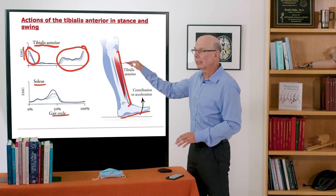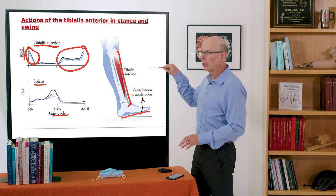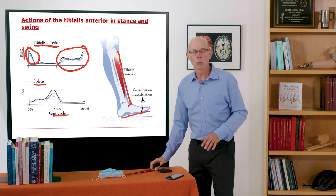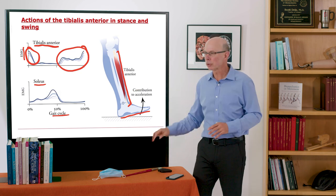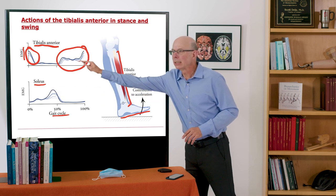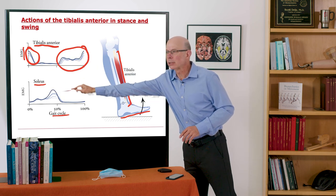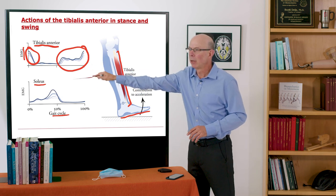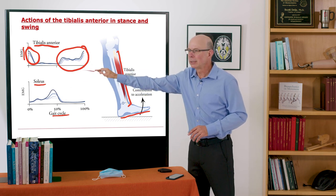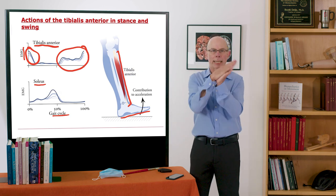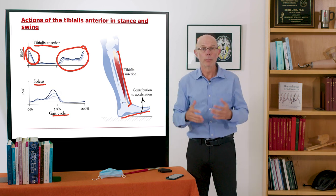So interestingly, if you look at the tibialis anterior and the soleus. So here's tibialis anterior here, soleus is on the back. These are what we would call antagonistic muscles and you can see tibialis anterior is on, soleus is off. Soleus ramps up, tibialis anterior turns off. Soleus ramps down, tibialis anterior cranks it up. So they're really working together to control the motion of the foot.